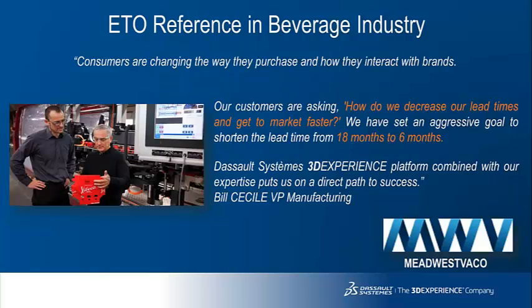Another example is Mead WestVaco — a company that designs and manufactures machines for secondary packaging in the beverage, food and healthcare sectors and for a variety of other consumer products. As you can see in the quote from the manufacturing VP, the target is not to divide lead time by 5% or 10%, but by one third. Why? Because the package definition is totally connected to trends in consumer behaviour. Once this behaviour is understood, companies must react very quickly to design products that respond to those trends. Time to delivery is key and a huge competitive advantage.